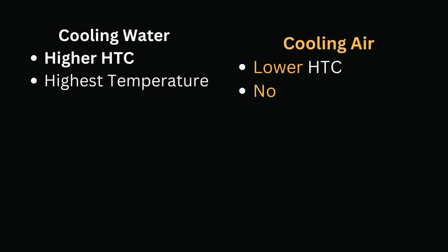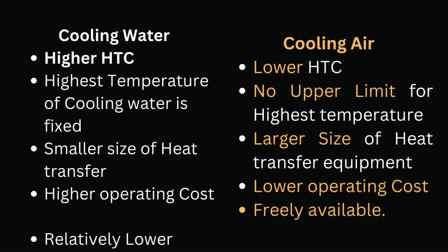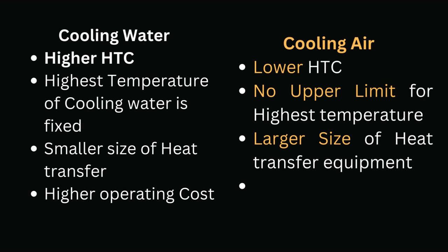Now let's compare the cooling utilities. We have two options: cooling water and cooling air. Cooling water has a higher heat transfer coefficient compared to air. The highest temperature of cooling water is fixed, with no such limit for air. Using cooling water results in smaller equipment size, though cooling water has a higher operating cost compared to air.